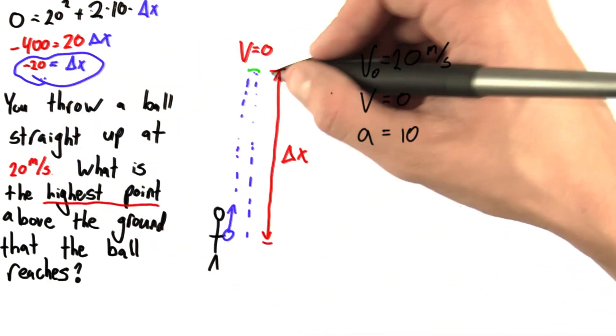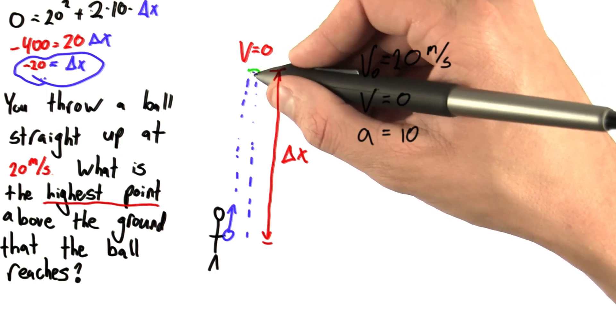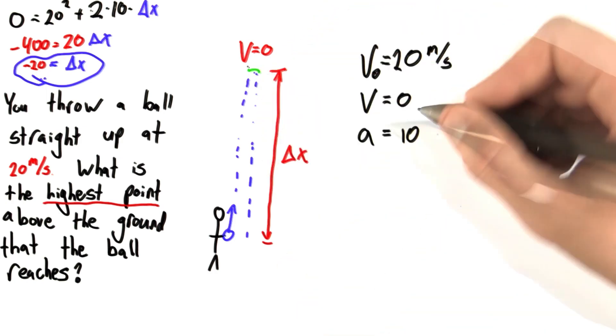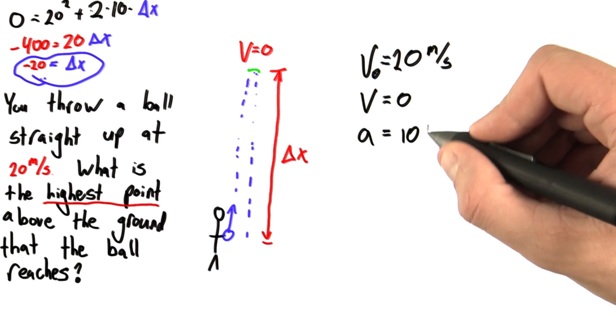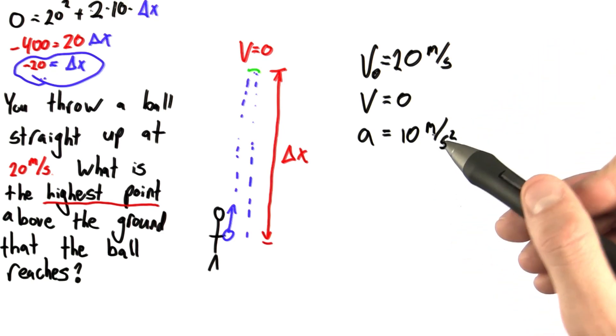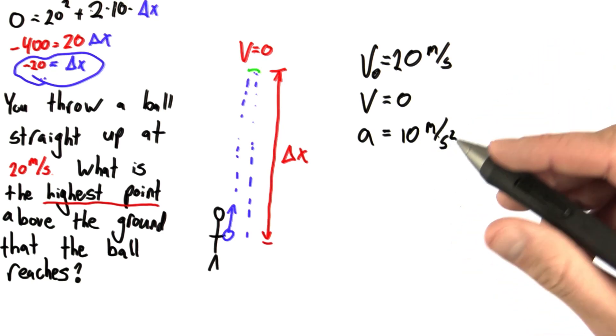We said the final velocity was 0. Can't really argue that. At the top of the trajectory, it does have to stop for a brief instant. And we said the acceleration was 10, and that's meters per second squared. Where on earth? Isn't that always the acceleration? Well, here's where we have to be careful.